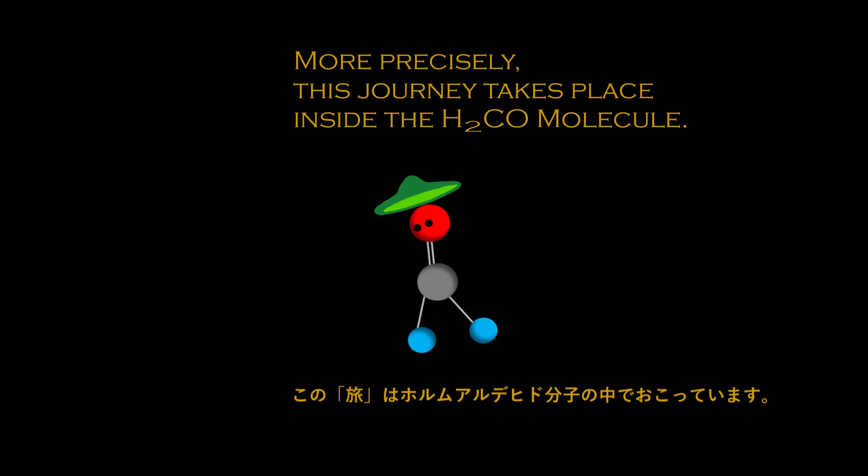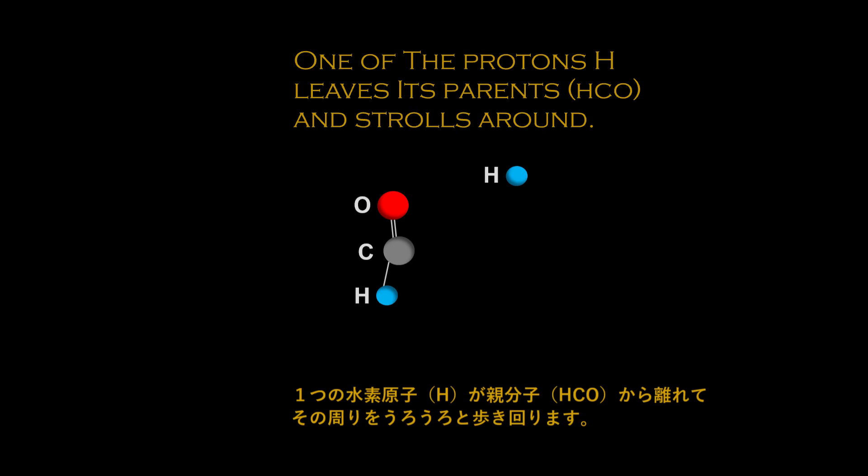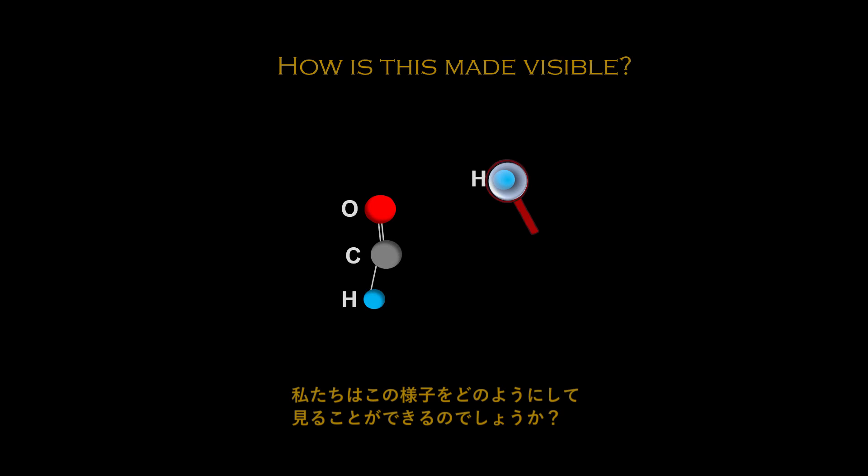More precisely, this journey takes place inside the H2CO molecule. One of the protons H leaves its parent HCO and strolls around. How is this made visible?